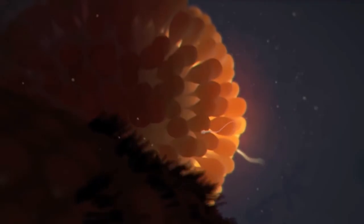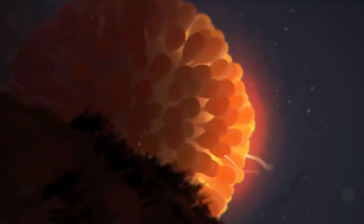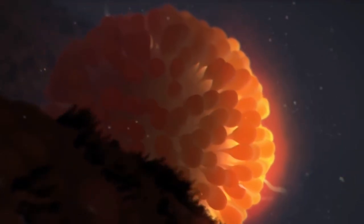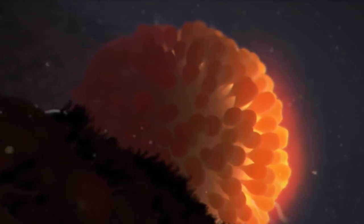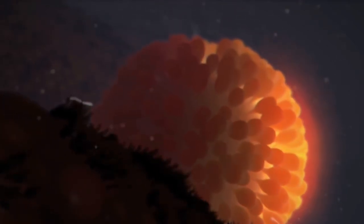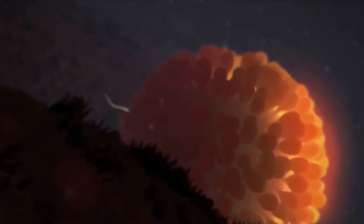This new single cell, the zygote, is the beginning of a new human being. And now the cilia in the fallopian tube gently sweep the zygote toward the uterus, where he or she will implant in the rich uterine lining, growing and maturing for the next nine months until ready for birth.